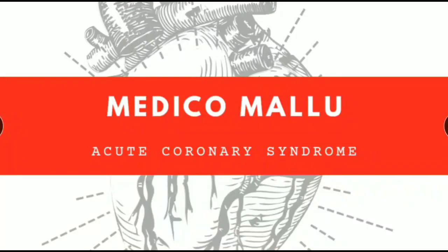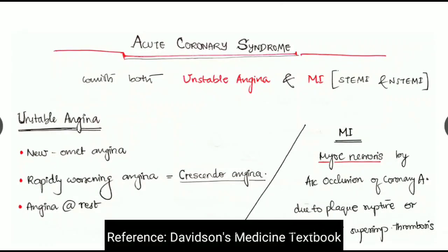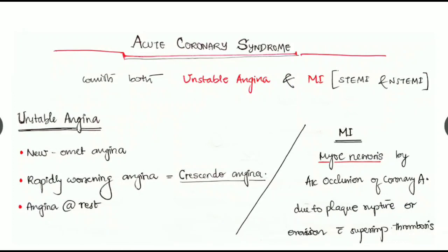Hello friends, welcome to Medico Melun. Today we are going to see the topic acute coronary syndrome. Acute coronary syndrome consists of both unstable angina and myocardial infarction. This MI can be STEMI (ST segment elevated myocardial infarction) and NSTEMI (non-ST segment elevated myocardial infarction).